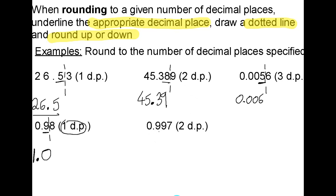In the final example, I'm going to round to two decimal places. So I underline the 9, which is in the second decimal place, and draw a dotted line. The number immediately after the dotted line is 7, which tells me to round up. So that will round the 9 in the hundredths column up to ten hundredths, which is one-tenth. And then that will round the 9 in the tenths column up to one unit. So you might think the answer is just 1, but because we're rounding to two decimal places, I need to give my answer as 1.00.